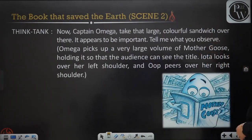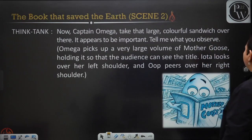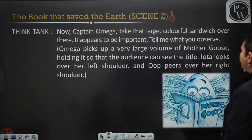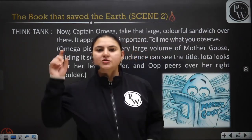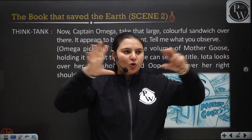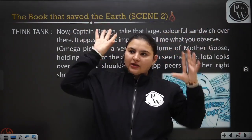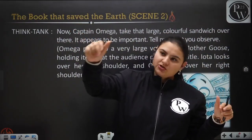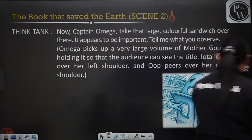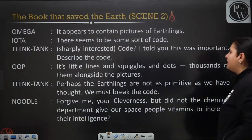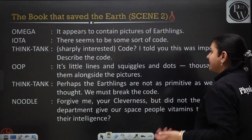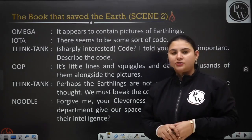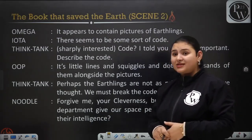Think Tank points to a large colorful item and tells Omega to bring it and describe what she observes. Omega picks up a very large volume of Mother Goose, holding it so the audience can see the title. Iota looks over her left shoulder and Ope peers over her right shoulder. Omega says it appears to contain certain pictures of earthlings. Iota says there seems to be some sort of code — and we know that the code is actually just the English language, but since they cannot understand it, they think it is a code.